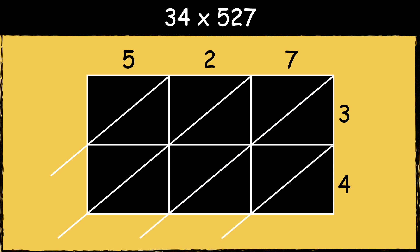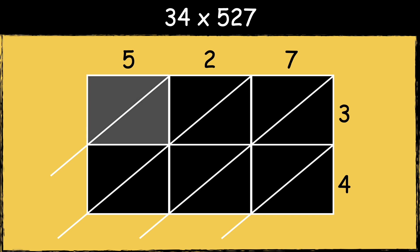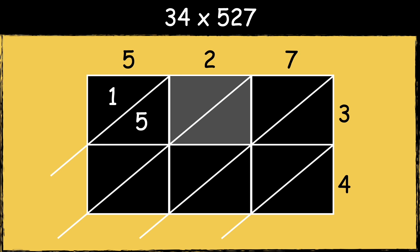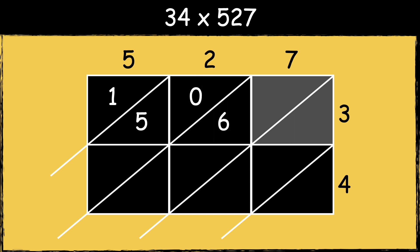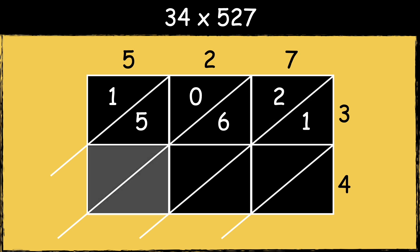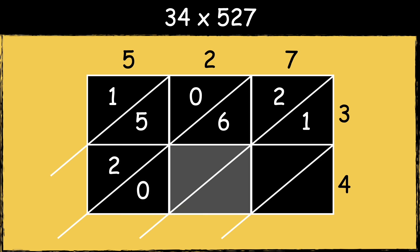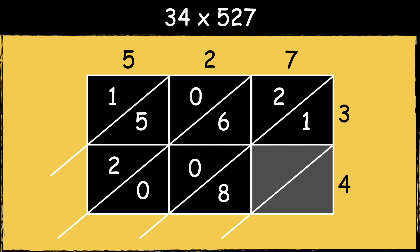Now we are ready to multiply. 5 times 3 is 15. 2 times 3 is 6. 7 times 3 is 21. Then we do 5 times 4 which is 20. 2 times 4 is 8. And 7 times 4 is 28.